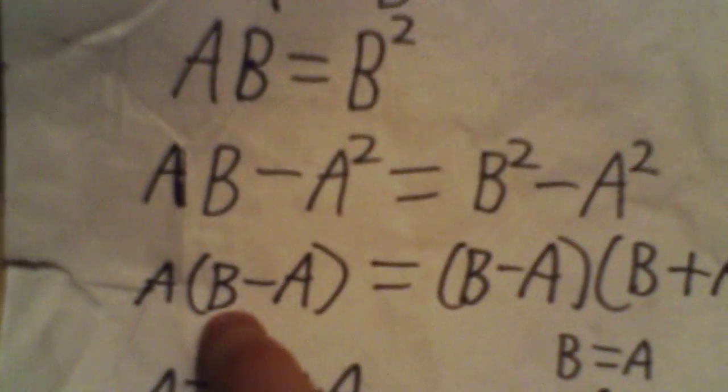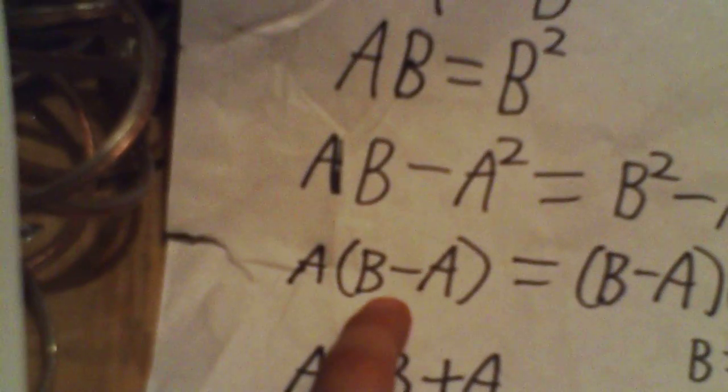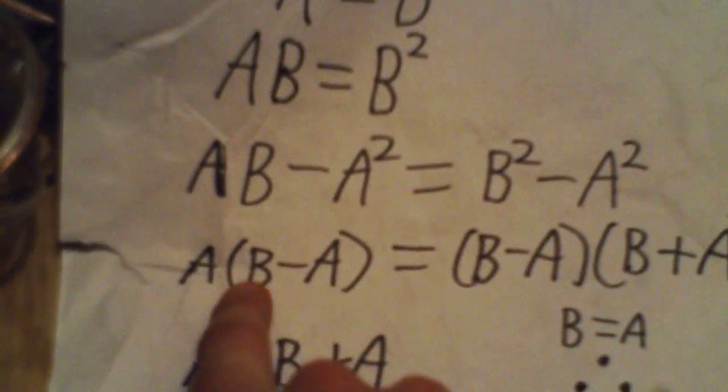So it doesn't work from that angle. The second problem is that because we've already proven down here that B minus A equals 0, dividing by the B minus A term means that you're dividing by 0, which you can't do.